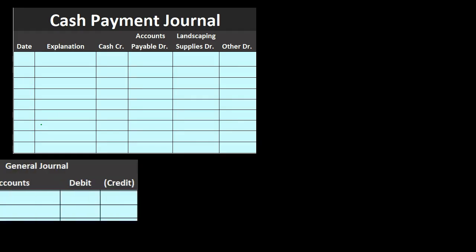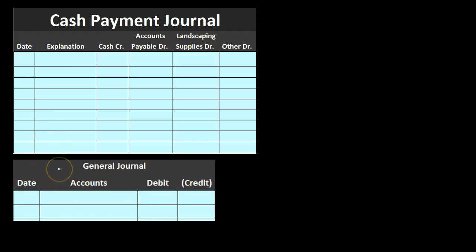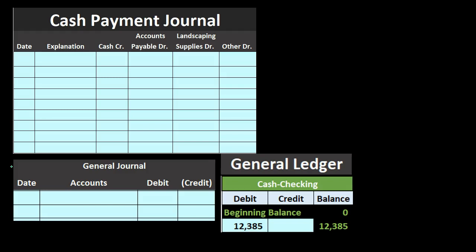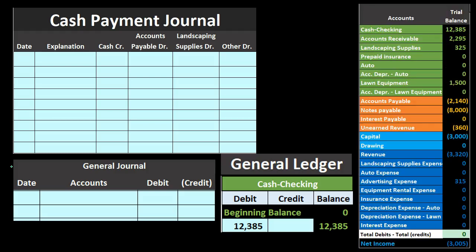Here is our cash payment journal. Once we're done with all transactions for the entire month, we'll make one summary transaction — that's what simplifies the process in our general journal, as opposed to having every transaction in the payment journal be its own general journal entry posted throughout the period. We'll enter transactions into our journal, then record the totals to the general journal, post to the general ledger, and create the trial balance.